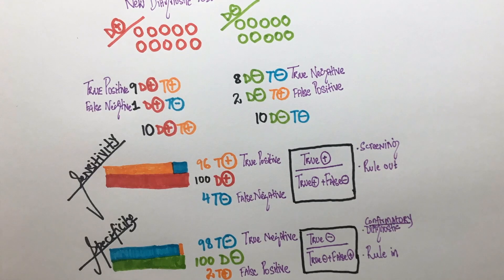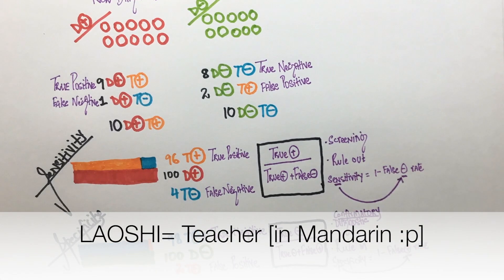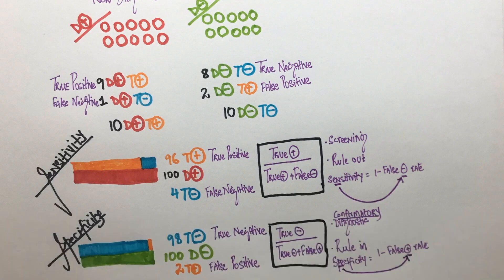From this formula, we can also remember that sensitivity is equal to 1 minus the false negative rate and specificity is 1 minus the false positive rate. My lecturer at university told us a trick to remember this. N in sensitivity corresponds to the N in negative and P in specificity corresponds to the P in positive.